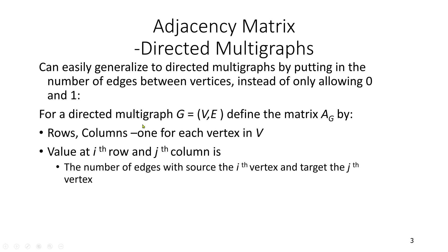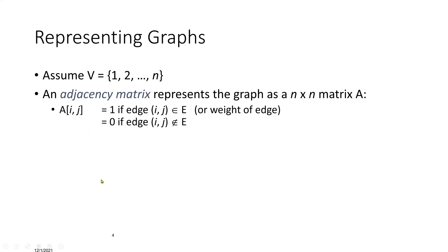For a directed multi-graph G, which consists of V and E, we define the matrix A_G by rows and columns — again, one for each vertex. But this time, the value at the i-th row and j-th column is the number of edges which source the i-th vertex and target the j-th vertex. The best way to understand this is through an example.